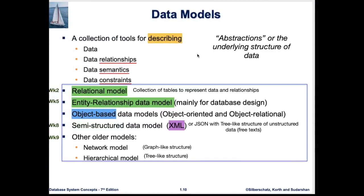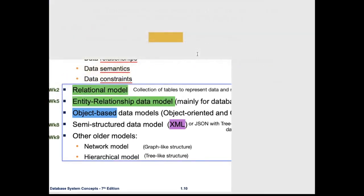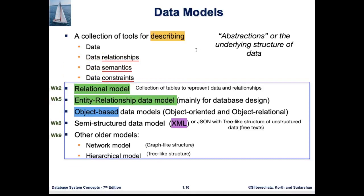The next topic is data models. Data models can be thought of as an abstraction that describes the underlying structure of data. A data model is a collection of tools that describes the data itself, the relationships between data, the meaning of the data, and the constraints set on the data. There are different types of data models.